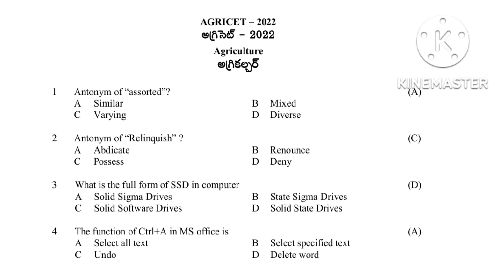Question 3: What is the full form of SSD in computers? Options are Solid Sigma Drives, Straight Stigma Drives, Solid Software Drives, and Solid State Drives. The answer is D, Solid State Drives. Question 4: The function of Ctrl+A in MS Office is to select all text. The answer is select all.